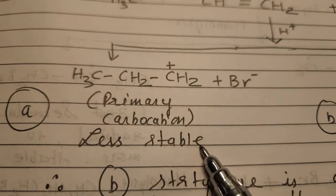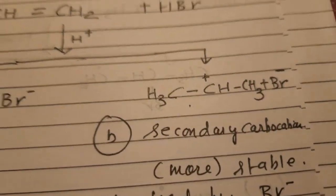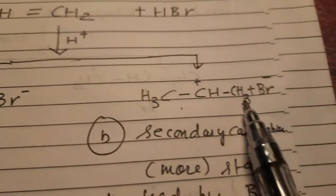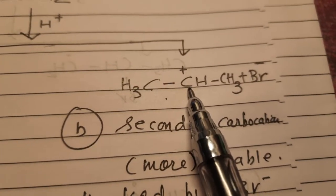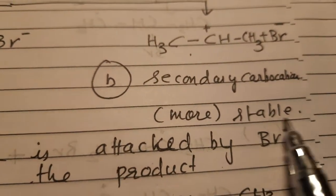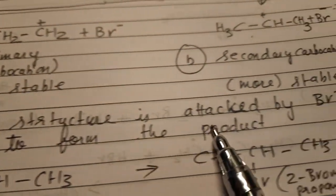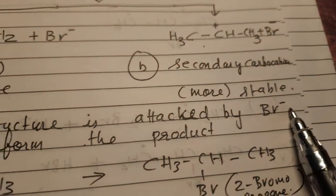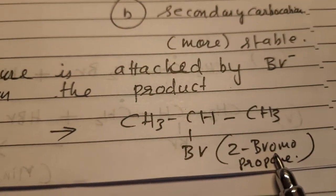If H⁺ adds to the terminal carbon (first position), it forms a primary carbocation — which is less stable. However, if H⁺ adds to the CH end, forming CH3-C⁺H-CH3, that gives a secondary carbocation — which is more stable. The more stable secondary carbocation is then attacked by Br⁻, since it carries a positive charge, giving 2-bromopropane as the product.